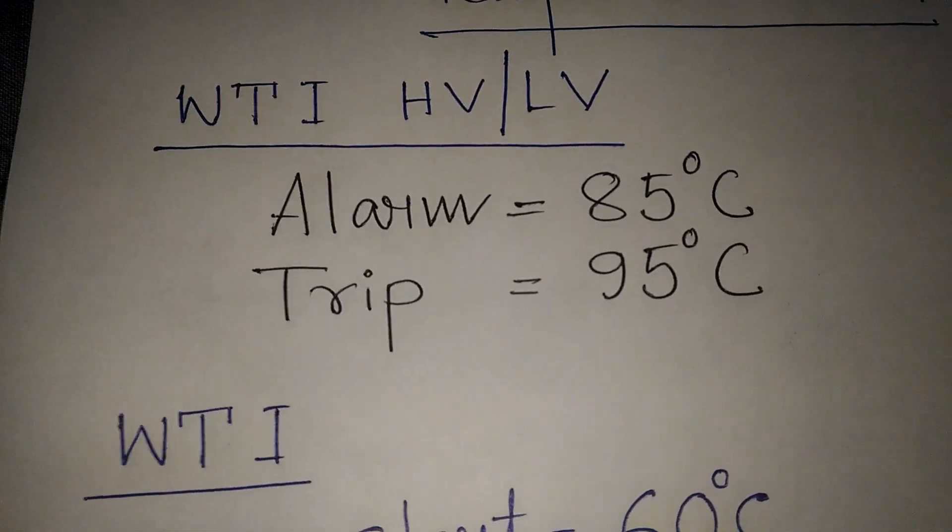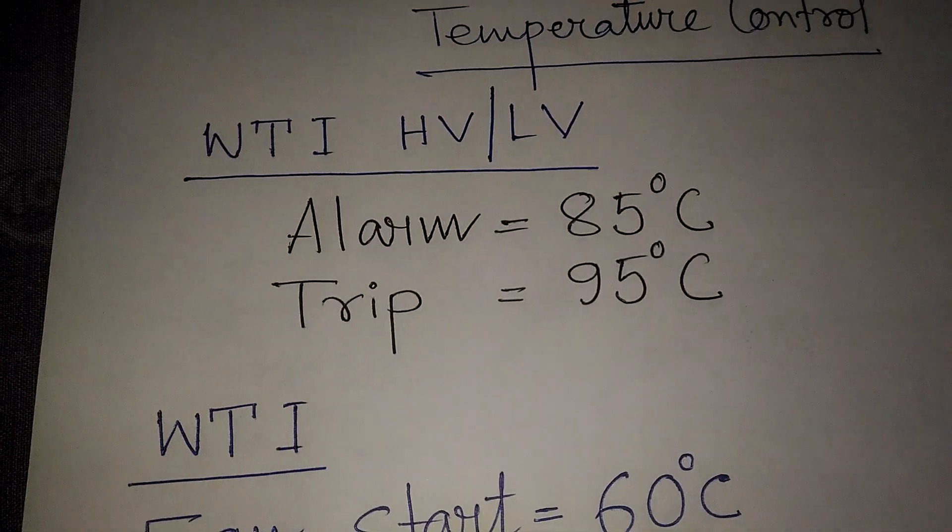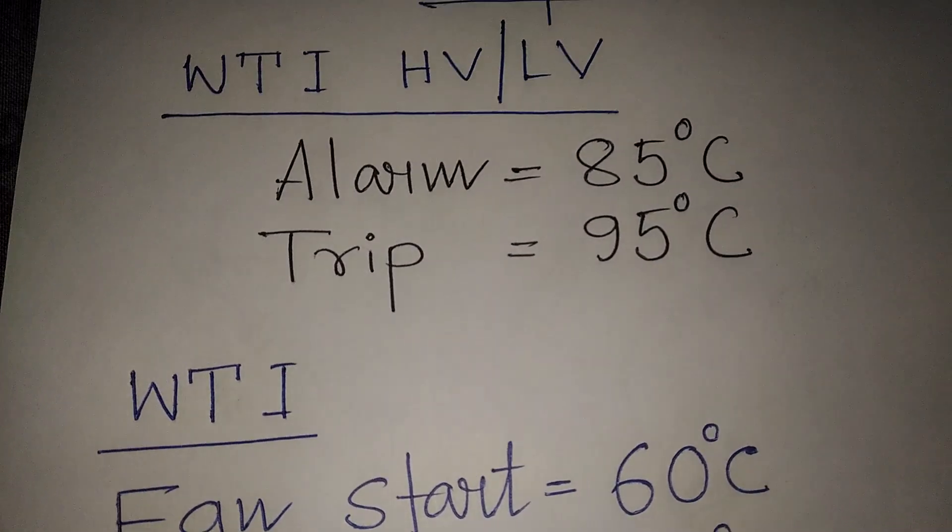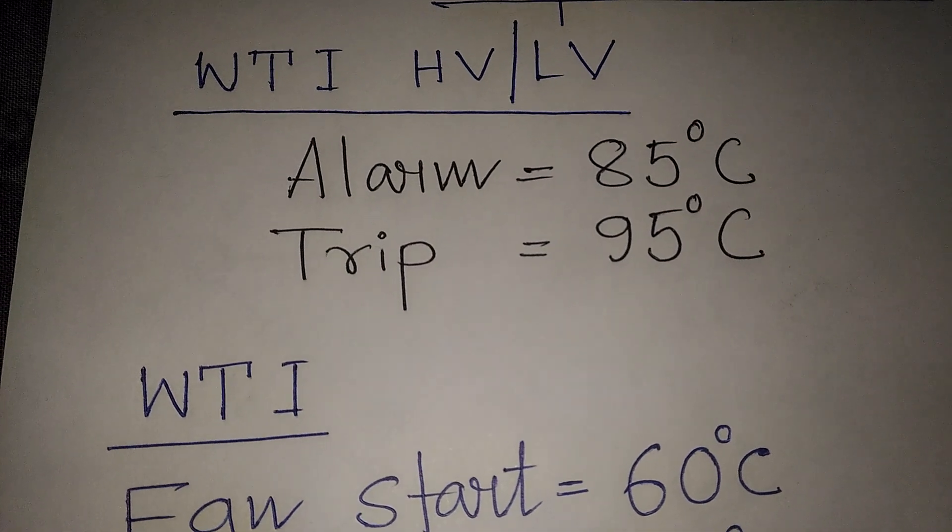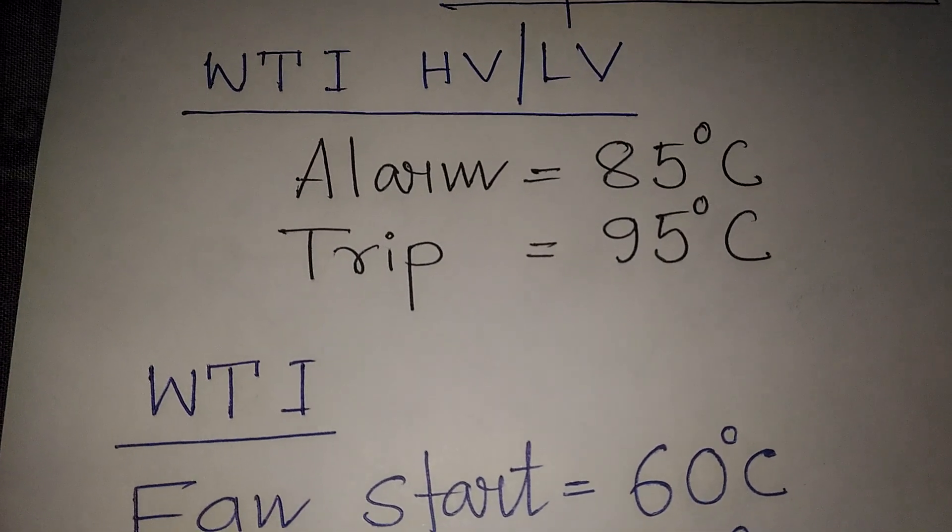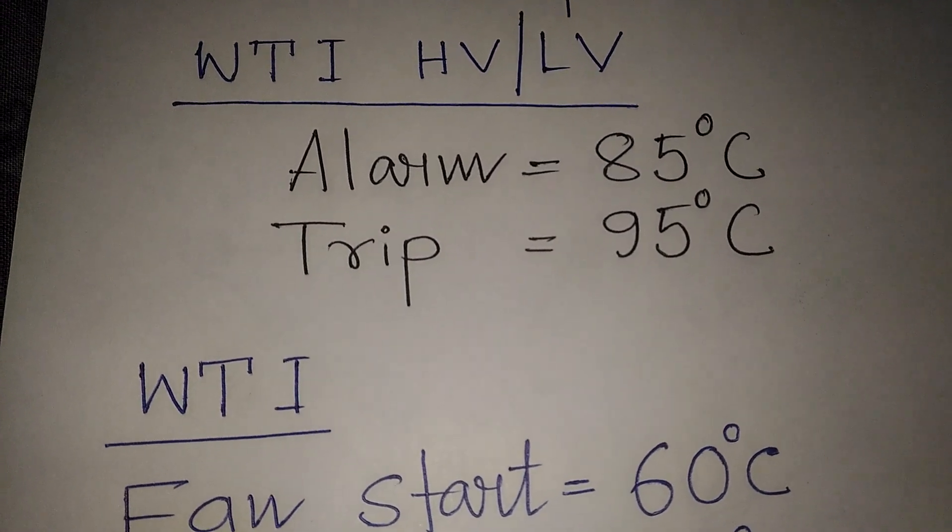In case of the WTI, we can set the alarm. The WTI alarm is 85 degree centigrade and trip of the transformers is 95 degree centigrade.